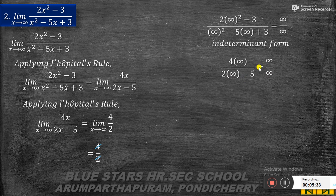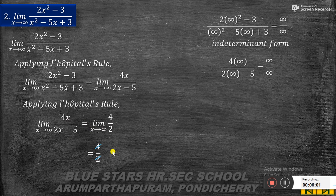Getting the indeterminate form a second time, we apply L'Hôpital's rule again. For limit x tends to infinity of 4x by (2x minus 5): differentiating numerator gives 4, and differentiating denominator gives 2. So 4 by 2 equals 2. Therefore, limit x tends to infinity of (2x squared minus 3) by (x squared minus 5x plus 3) equals 2.